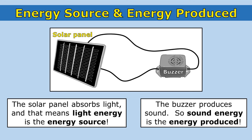Here I have a solar panel attached to a buzzer. The solar panel absorbs light, so light energy is the energy source. The buzzer produces a sound, so sound energy is the energy produced. Electricity is involved in this, but it's not the energy going in and it's not the energy coming out. The energy source is light — that's the energy going in — and the energy produced is sound — that's the energy coming out.